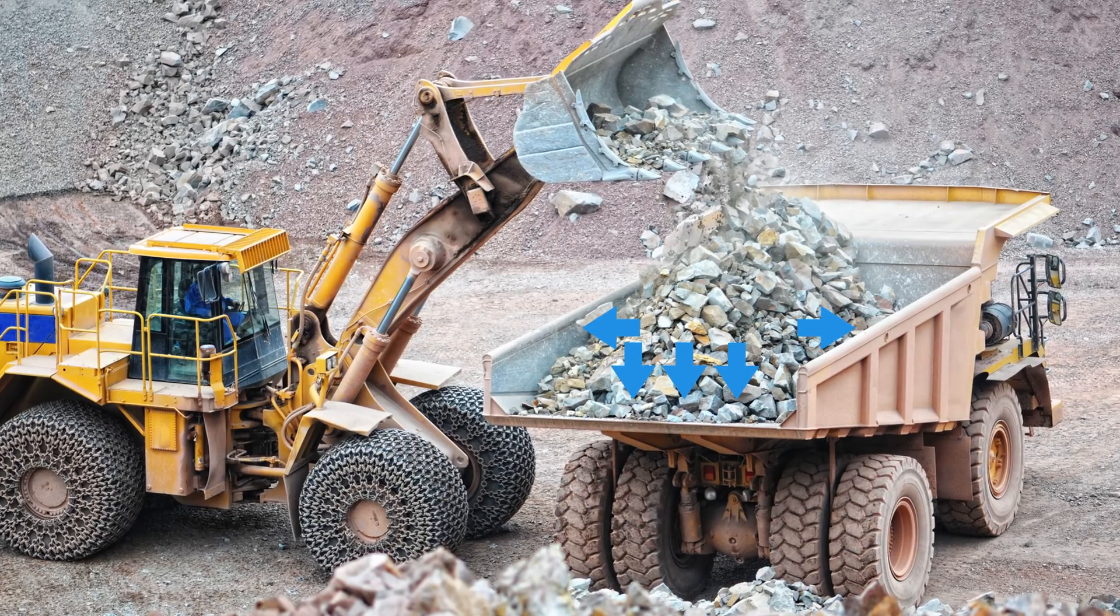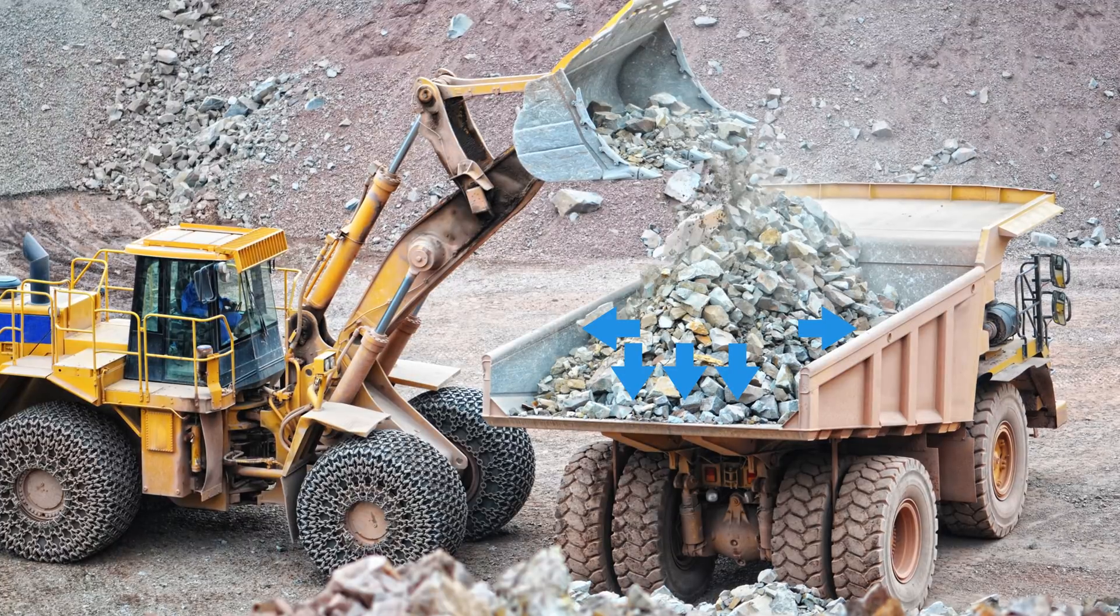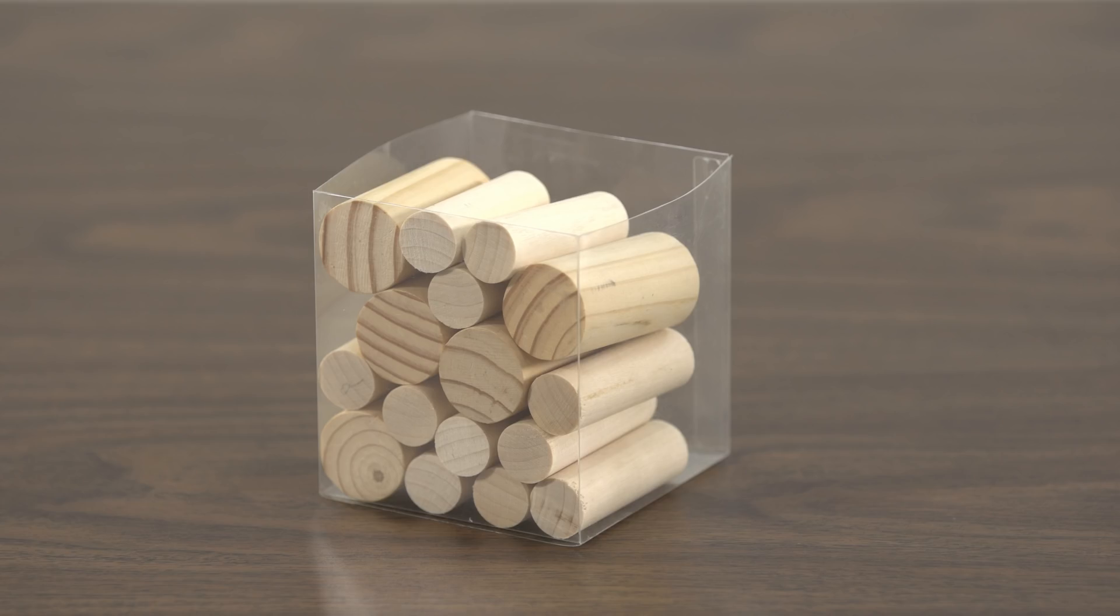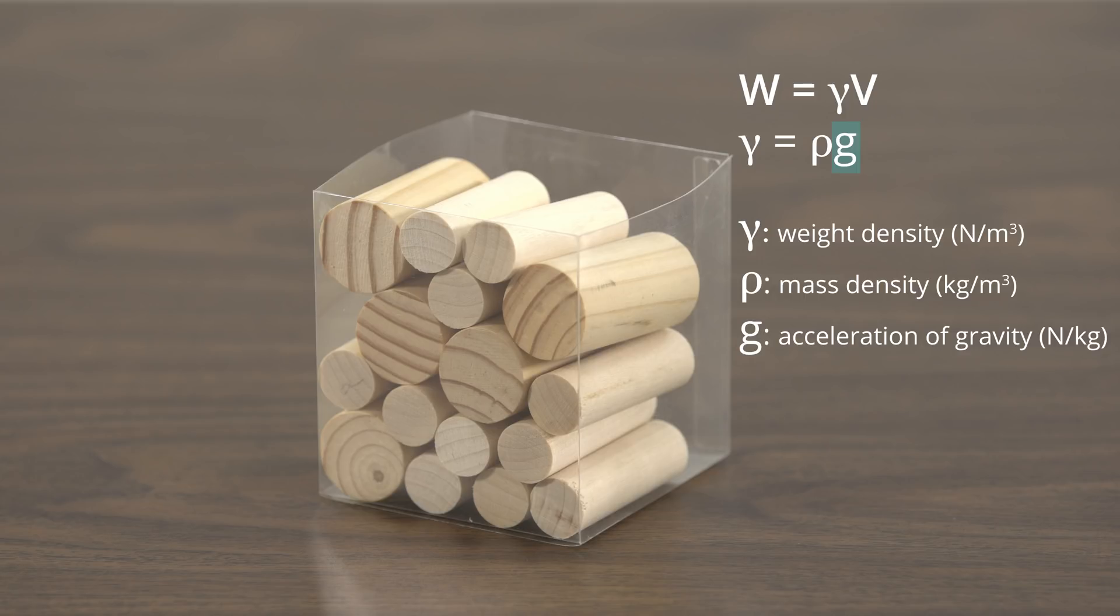In this video, we focus on how these pressures arise and on the factors that determine their magnitudes. To understand how granular materials generate pressures on their containers, consider a box filled with wooden cylinders. Collectively, the cylinders produce a downwards force on the bottom of the container that is equal to their weight W. We could calculate this weight easily if we knew the weight density of the material in the container, a material property we denote using the letter gamma. In engineering, we often instead know the mass density, rho, of a material, and that quantity times g, the acceleration of gravity,